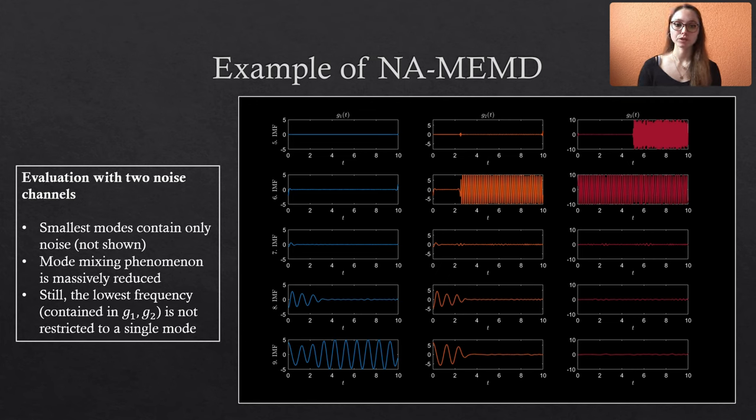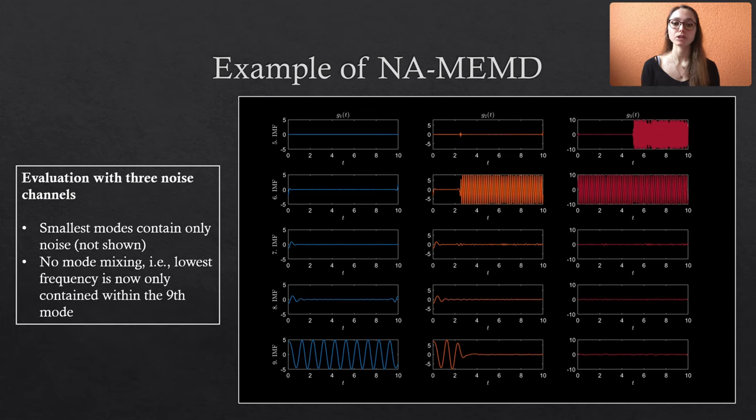If we add another noise channel, so we have three noise channels in total, we can also improve the allocation with respect to the lowest frequency. It is now contained in the ninth IMF. And due to that, we also know that the blue and the orange data share this specific frequency.